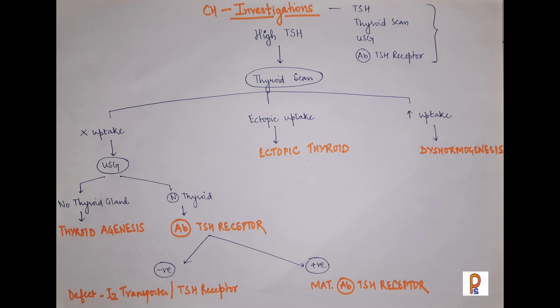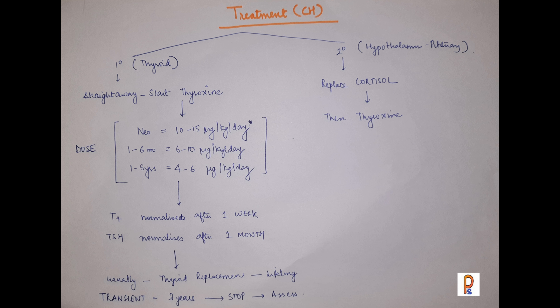Once the diagnosis of congenital hypothyroidism is made, treatment must be started quickly to prevent intellectual disability and neurological complications. Thyroid replacement is the treatment. For primary congenital hypothyroidism — thyroid dysgenesis or dyshormogenesis — thyroid replacement is started. For secondary causes related to hypothalamus or pituitary dysfunction, there may also be associated adrenal insufficiency, so adrenal replacement must also be provided.